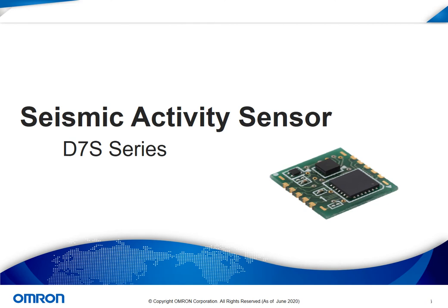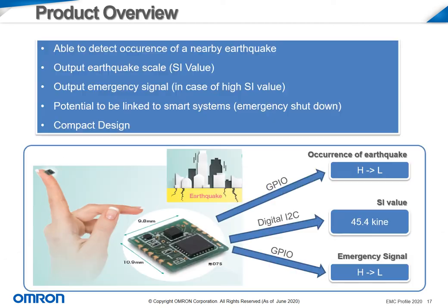Finally, we have the D7S sensor capable of measuring seismic activity caused by earthquakes. The OMRON D7S sensor was designed to detect the occurrence of any nearby earthquake. The sensor detects vibrations and outputs an earthquake scale and an SI value. The sensor software can actually link to smarter devices to output an emergency signal in case the SI value becomes too high. This sensor can also be linked to smart systems such as emergency shutdowns so that any machinery working with fuel or high voltage can be shut down whenever a high SI value is detected.